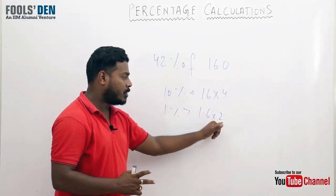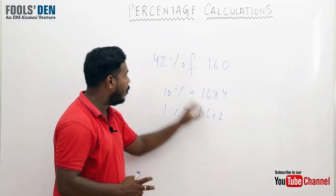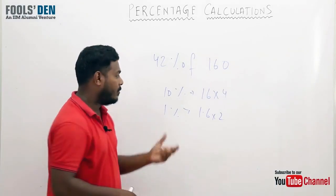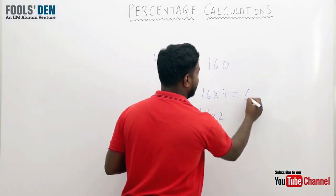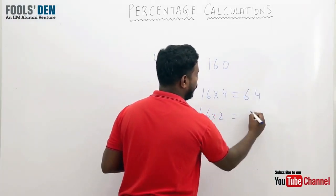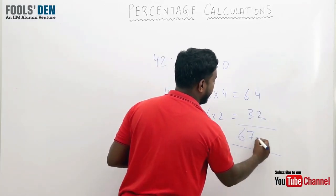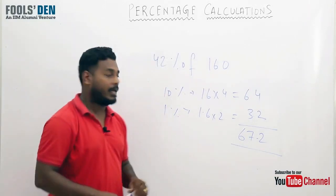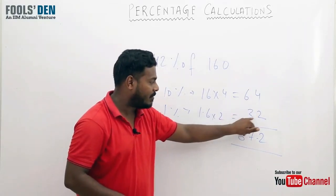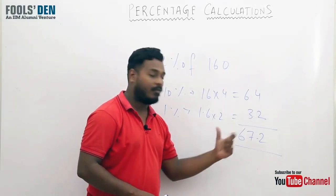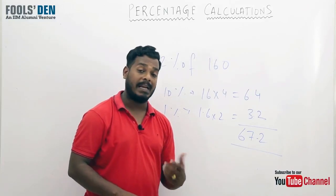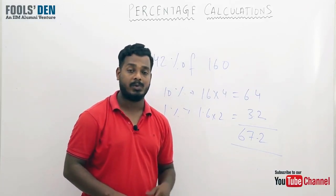So 10 times 4 is 40, and 1 times 2 is 2, total 40 plus 2, 42 percent. Let's see - 16 times 4 is 64, and 1.6 into 2 is 3.2, so the total would be 67.2. 64 plus 3.2 equals 67.2, and you can do this in your mind without using a pen.